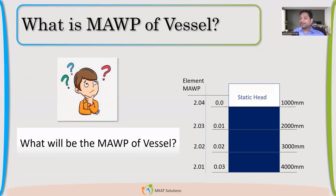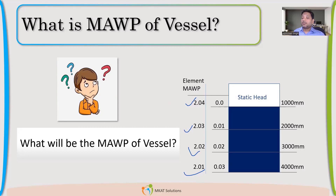What will be the MAWP because of static head? The MAWP for each segment: the top segment is 2.04, then 2.03, then 2.02, then 2.01. If we have different elements with different pressure-taking capabilities, you may wonder why the minimum — 2.01 — is considered as the MAWP rather than 2.04.